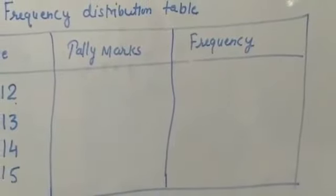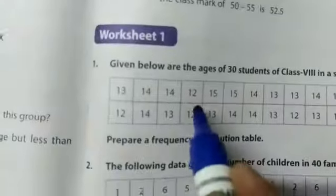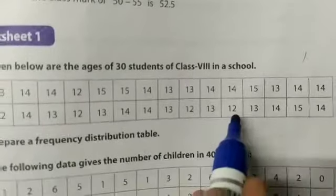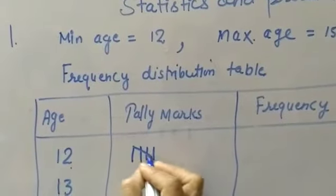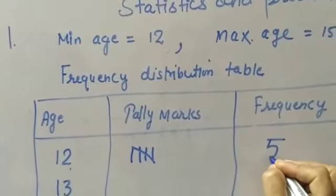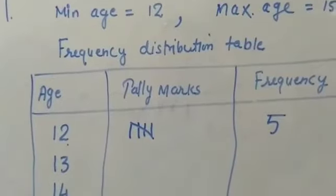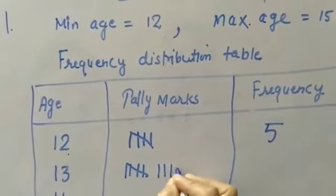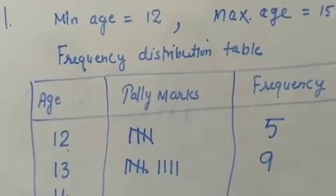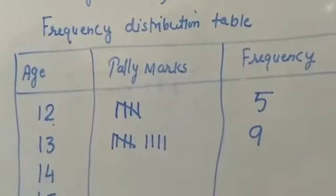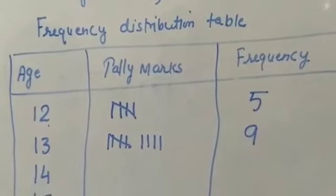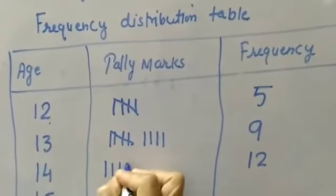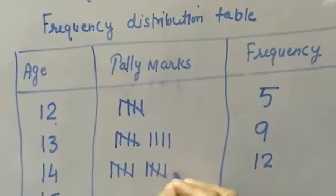So you have 12, how much time? Count: 1, 2, 3, 4, 5 - the frequency is 5. Similarly 13, check 9 times: 1,2,3,4,5,6,7,8,9. For 14, check: 12 times.